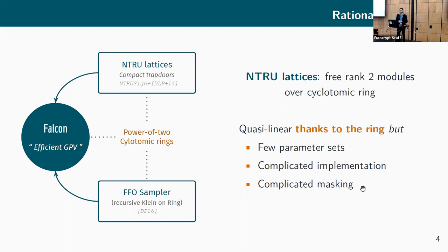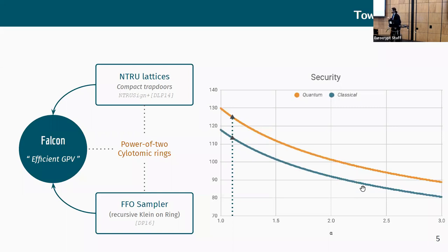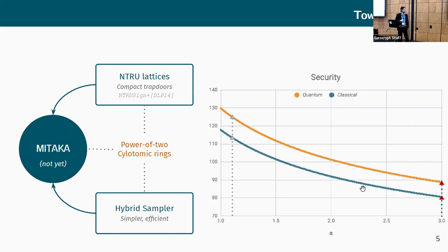Moreover, this FFO sampler is really nice from a mathematical point of view, but it's quite complicated to implement and is therefore very complicated to mask without tremendous overheads. To discuss why we changed and what changes we made to construct Mitaka, let me introduce a parameter which will be the quality parameter, denoted by alpha, which basically encodes the width at which you are allowed to sample using whichever sampler you want. For Falcon, this quality is something around 1.17. Since we're in a hash-and-sign paradigm, the quality at which you can sample directly drives the security against forgery. For Falcon, this 1.17 parameter gives you NIST level one compliant, like 128 bits of classical security.